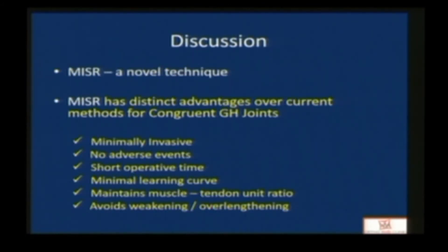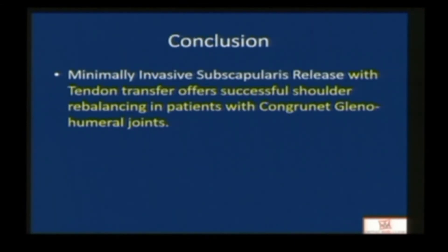MISR is a novel technique and, to our knowledge, has not been described in literature so far. It has distinct advantages for congruent glenohumeral joint: it is minimally invasive, has no adverse events, short operative time, minimal learning curve, maintains the muscle-tendon unit ratio without weakening muscles, and avoids over-lengthening. We conclude that minimally invasive subscapularis release with tendon transfer offers successful shoulder rebalancing in patients with congruent glenohumeral joint. Thank you very much.